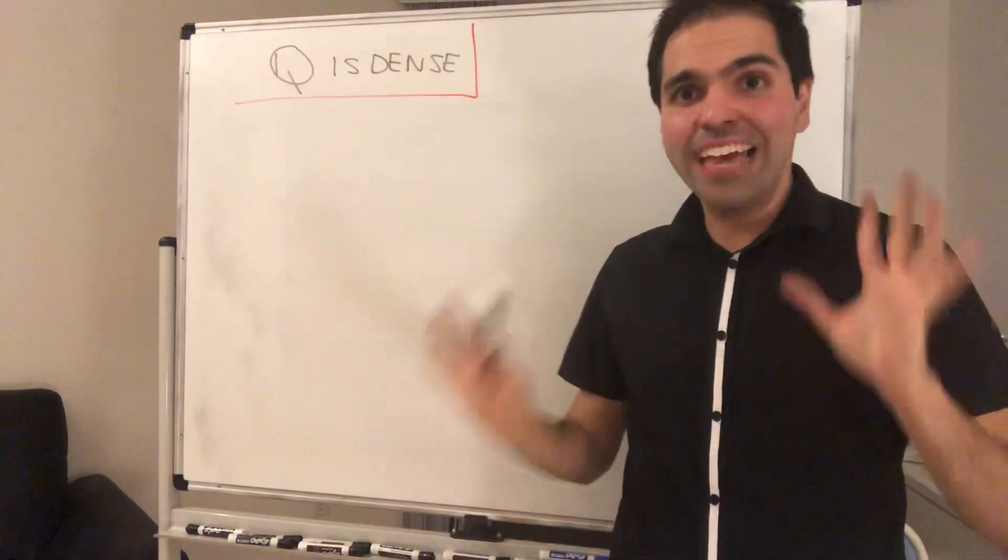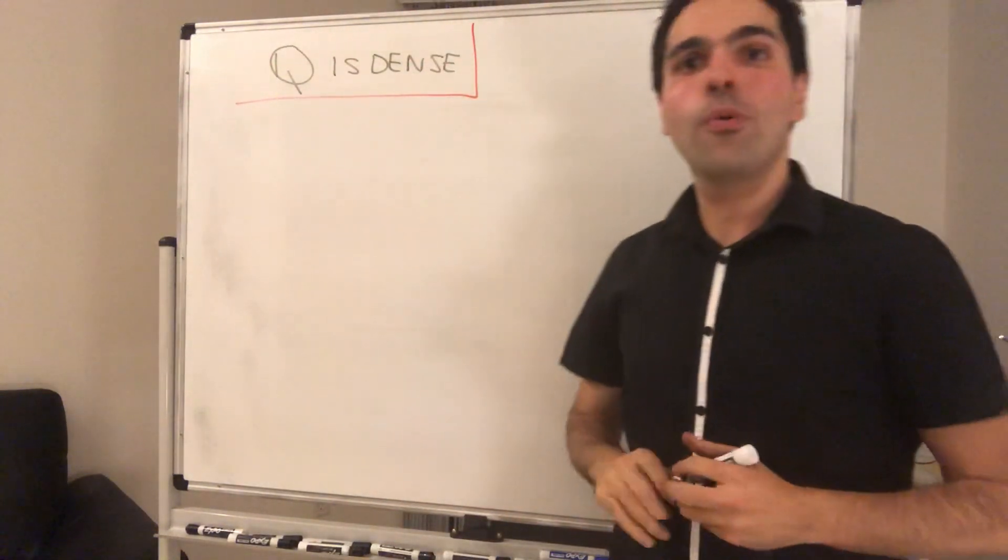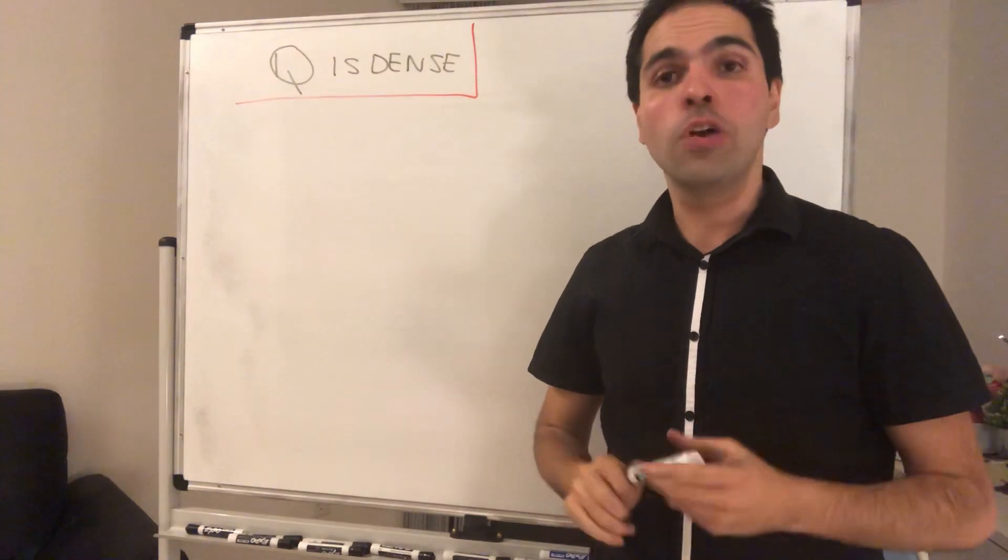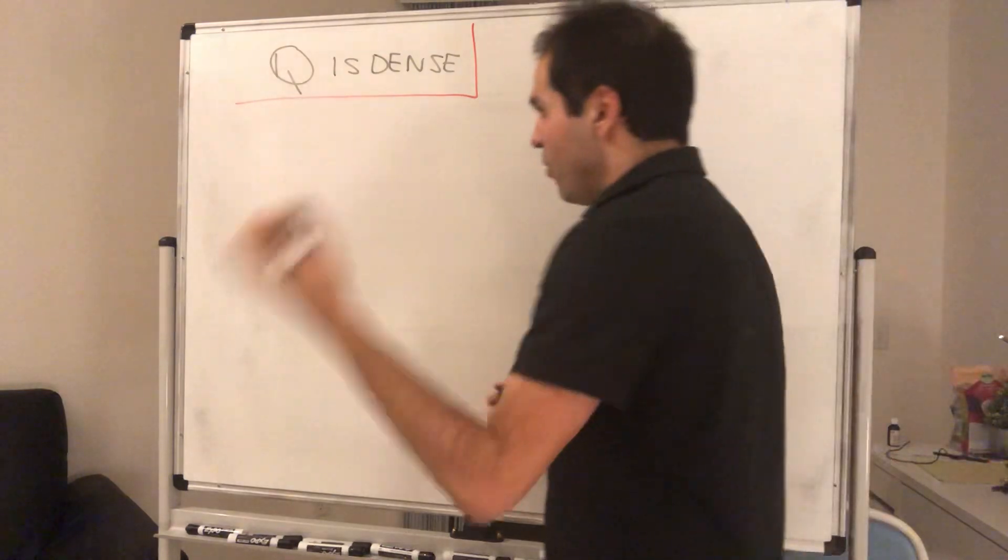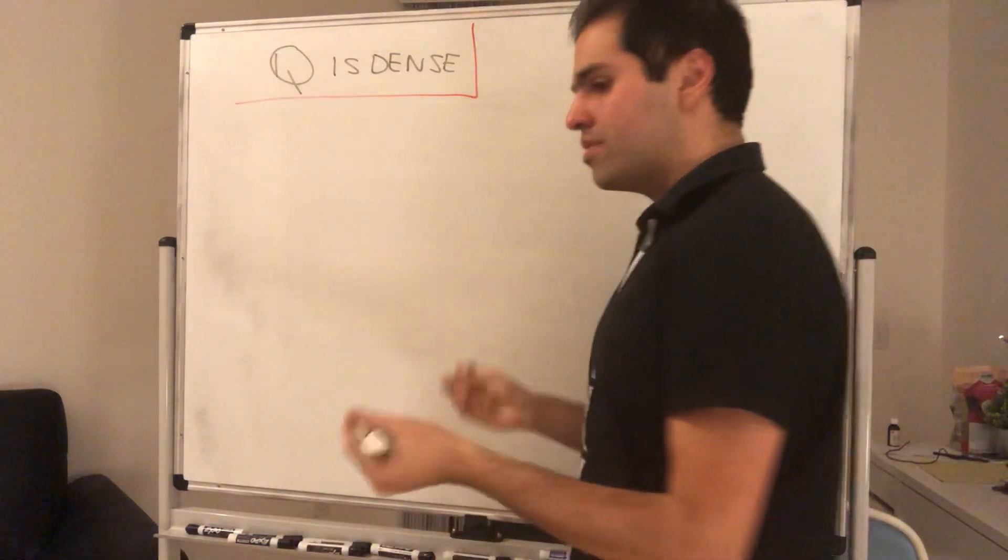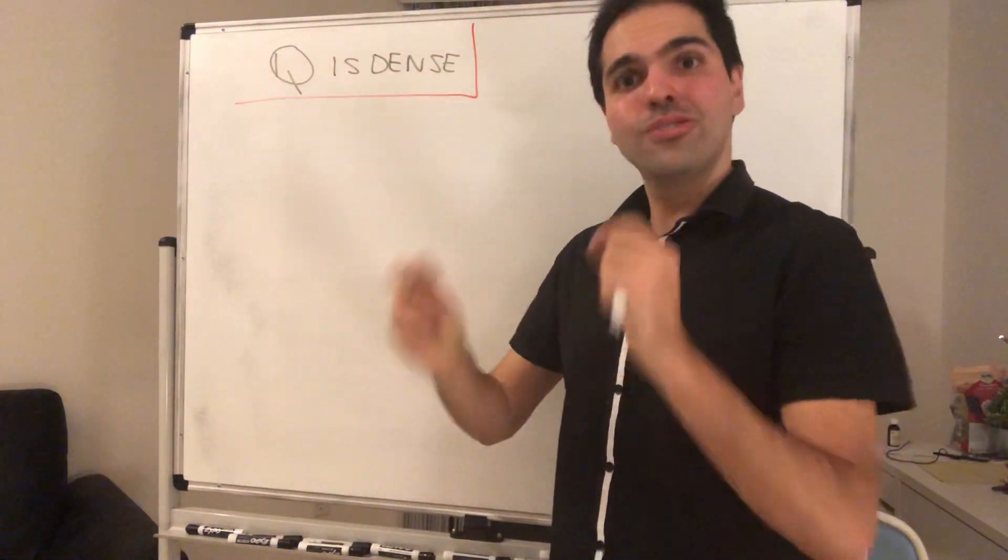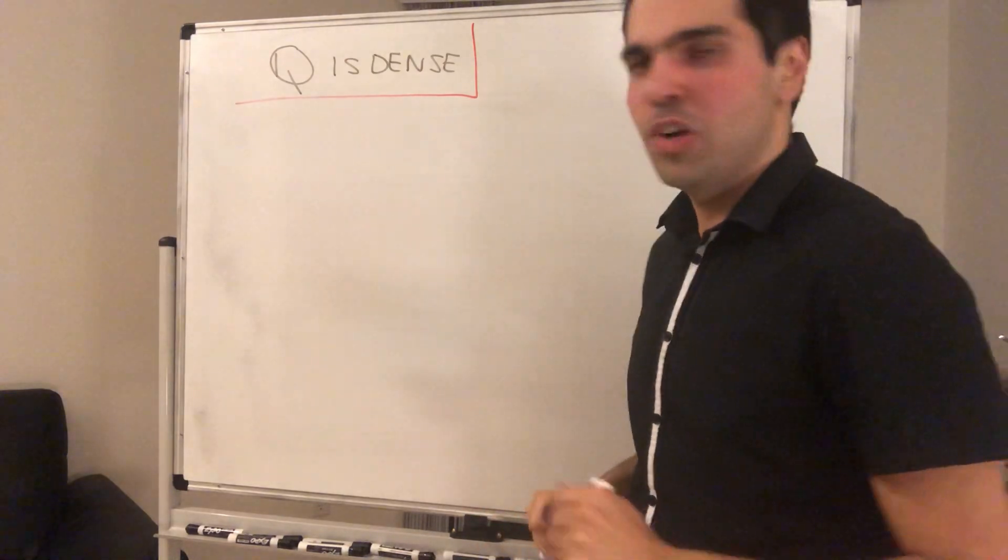Thanks for watching. Today I want to prove a very important property of the rational numbers, namely that they are dense in the real numbers. What does that mean? In other words, given any two real numbers, you can always find a rational number between them.